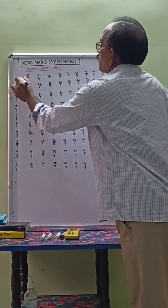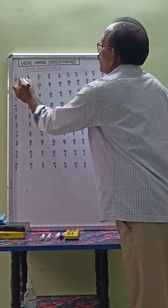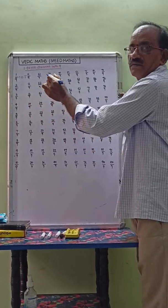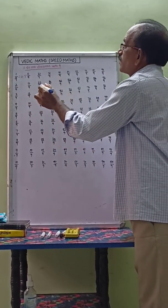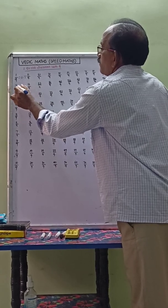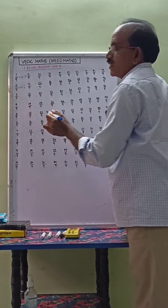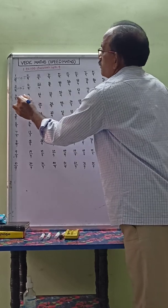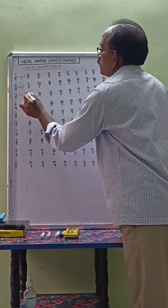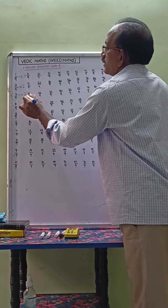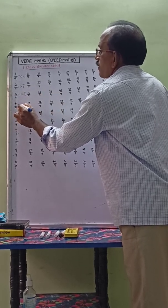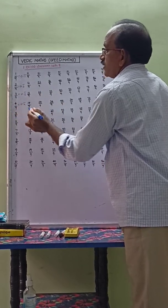1 by 9 equals 0.1 bar, that means 0.1111. 2 by 9 equals 0.2 bar. 3 by 9 equals 0.3 bar, that means 0.3333. 4 by 9 equals 0.4 bar. Very easy.